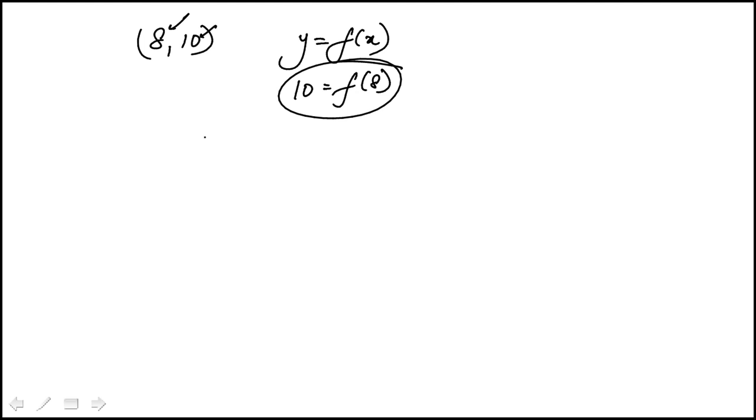They're asking you to find a point that must lie on the graph of this function. So the way I did this is that I said, well, this needs to come out to be f of 8, because I know what the value of f of 8 is.